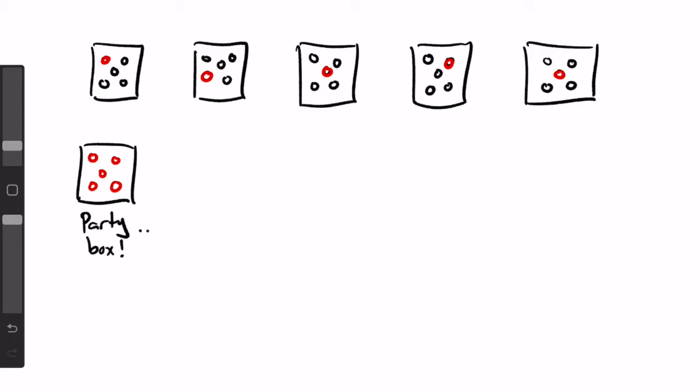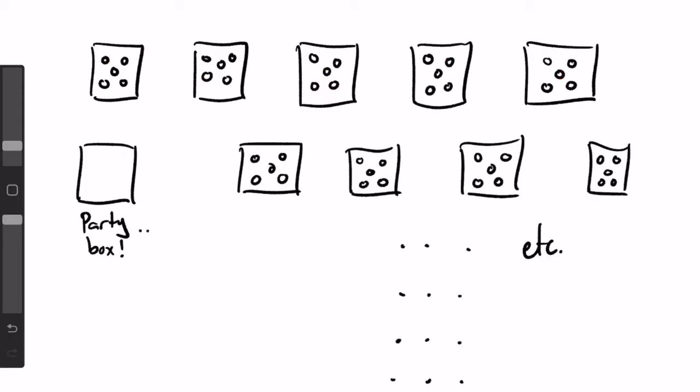Now let's say we have aleph-naught boxes, again, each with five indistinguishable cats. Recall that aleph-naught is the size of the set of natural numbers, aka countable infinity. Well, once again, this is no problem.